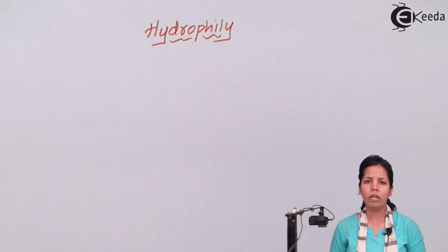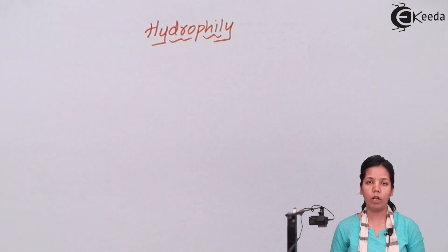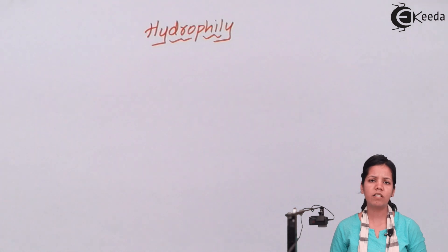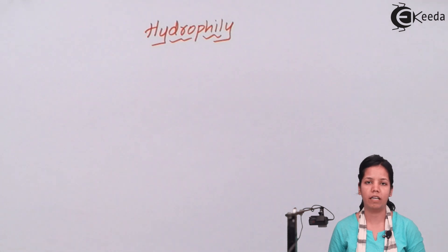Whenever a pollen grain reaches a flower, it coils and gets into the flower. The process of coiling helps in its process of fertilization.